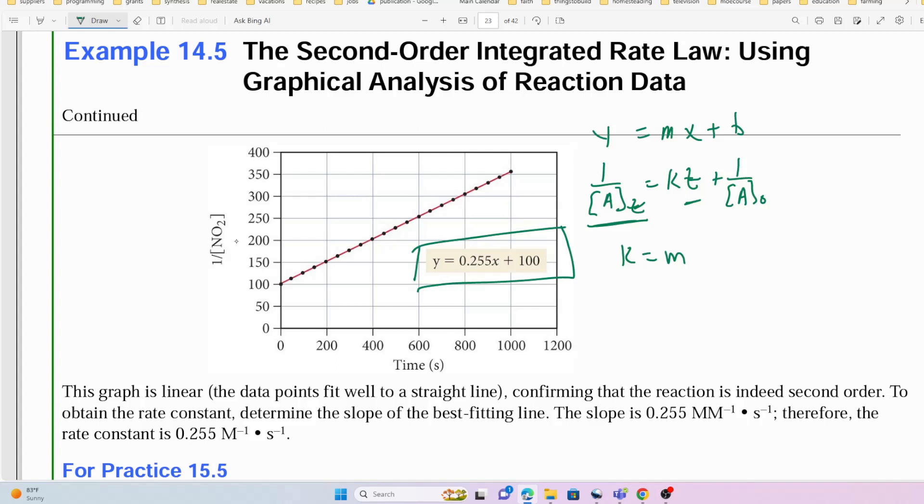You see here that k is equal to m, so k is the slope. So the slope is 0.255 for this reaction at this temperature.